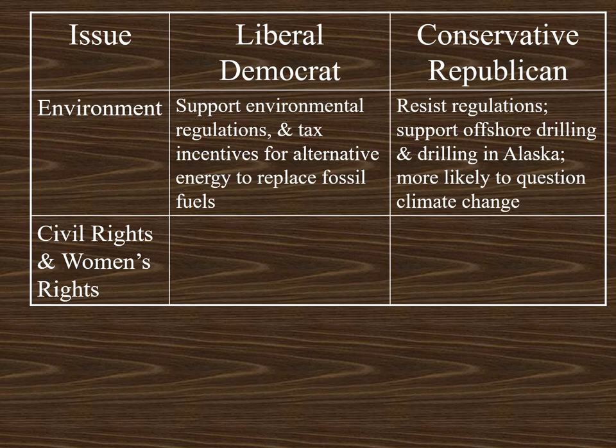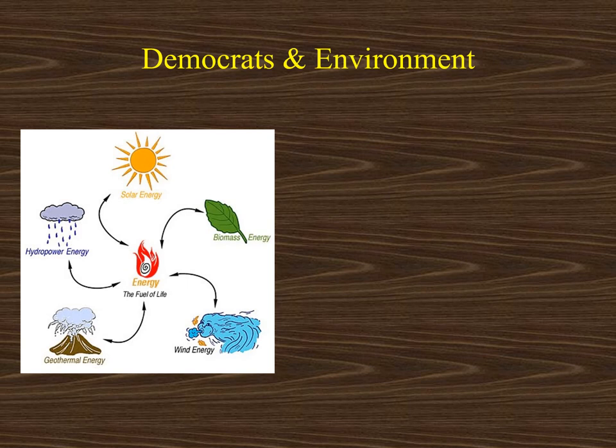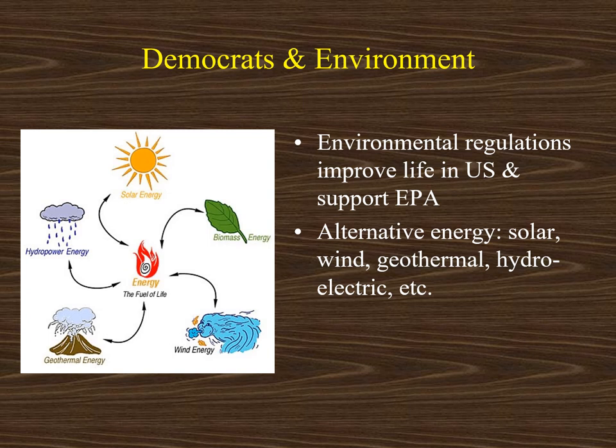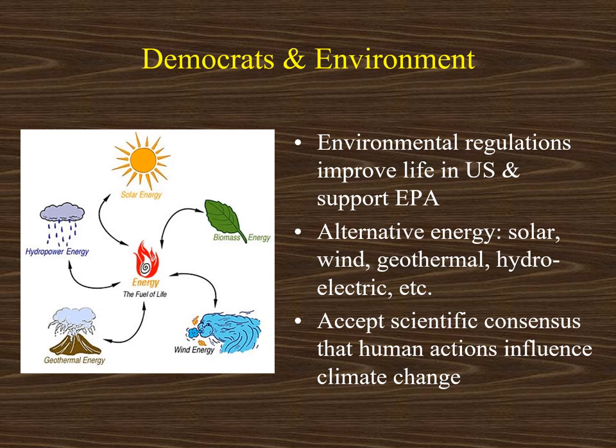Liberal Democrats would want the government to be more active to expand environmental regulations. They would support tax incentives to businesses that look to alternative energy to replace fossil fuels. Liberal Democrats would argue that things like the Clean Air Act and Clean Water Act improve life in the United States and would support the regulations of the Environmental Protection Agency. They would focus on alternative energy like solar, wind, and geothermal. Liberal Democrats are more likely to accept the scientific consensus that humans are impacting climate change.